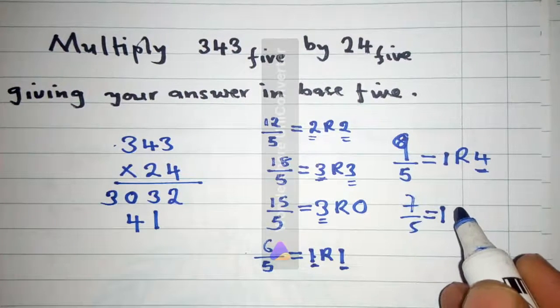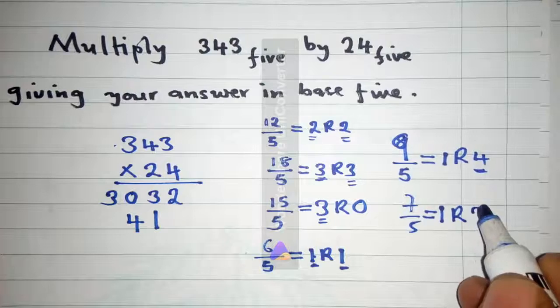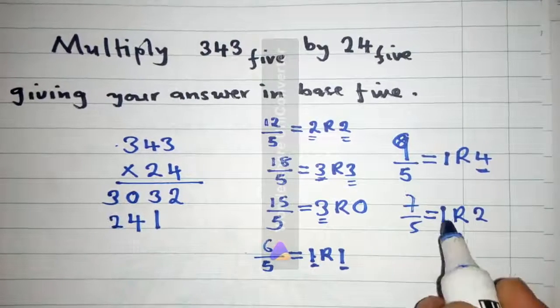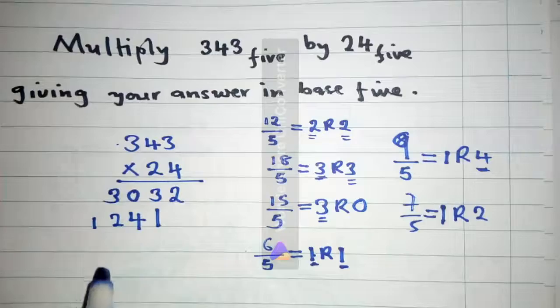So we write our 2, and this 1 we write it here, since numbers to multiply with are finished.